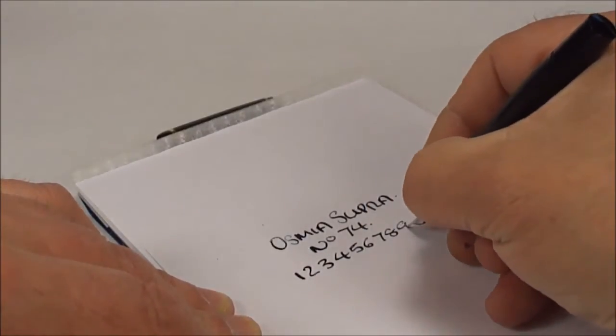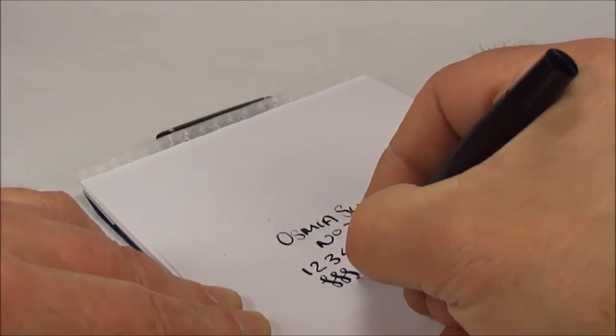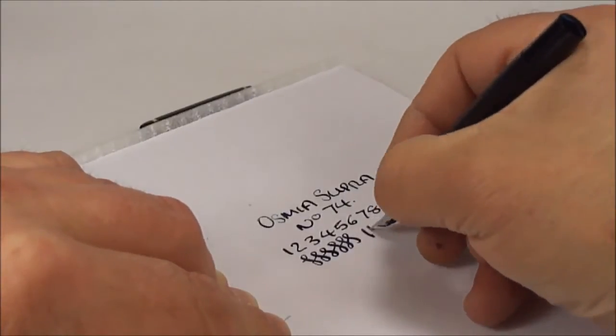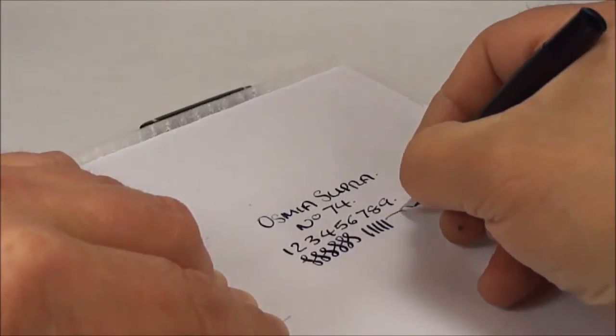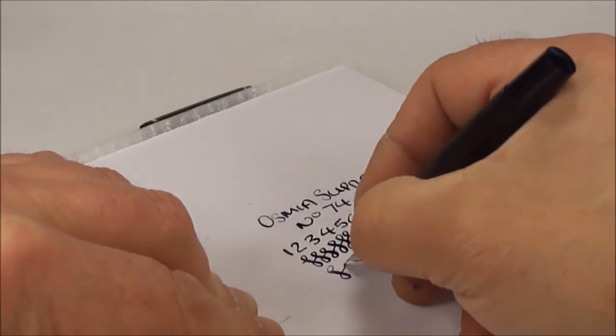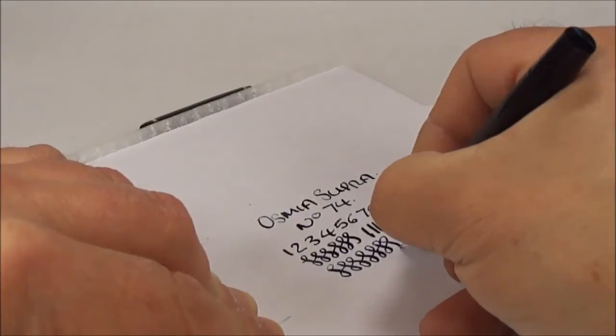There's actually some flexibility within the nib so on the downward stroke there you can see we're getting a nice variation in the line. So on a cross stroke it's quite a fine line and as I say on the downward stroke we're getting a lovely variation.